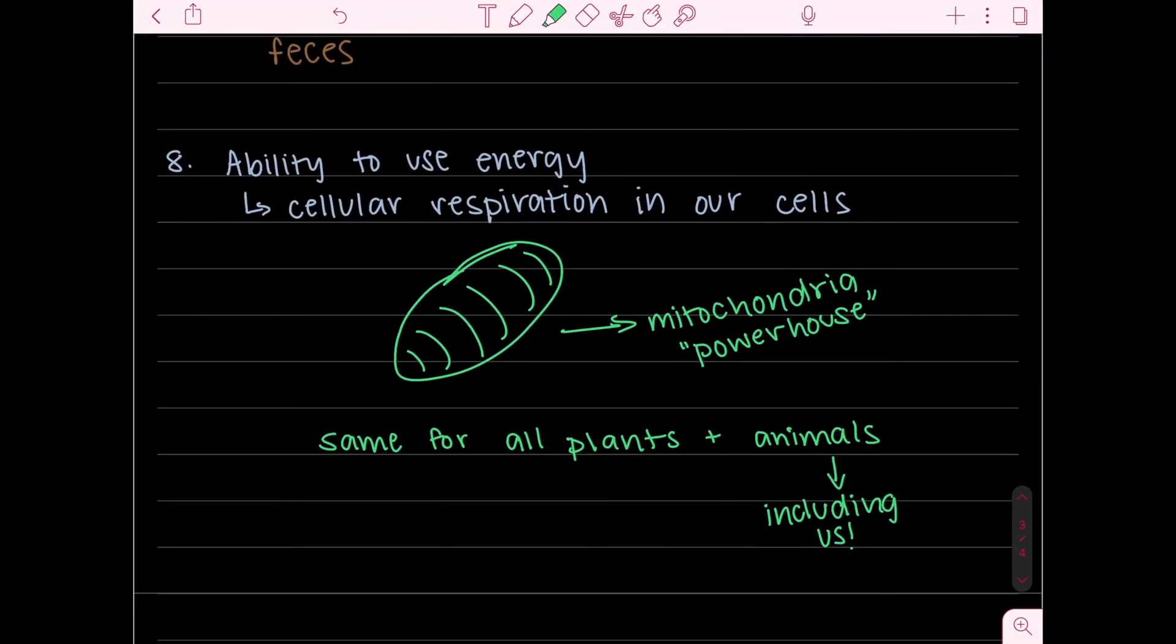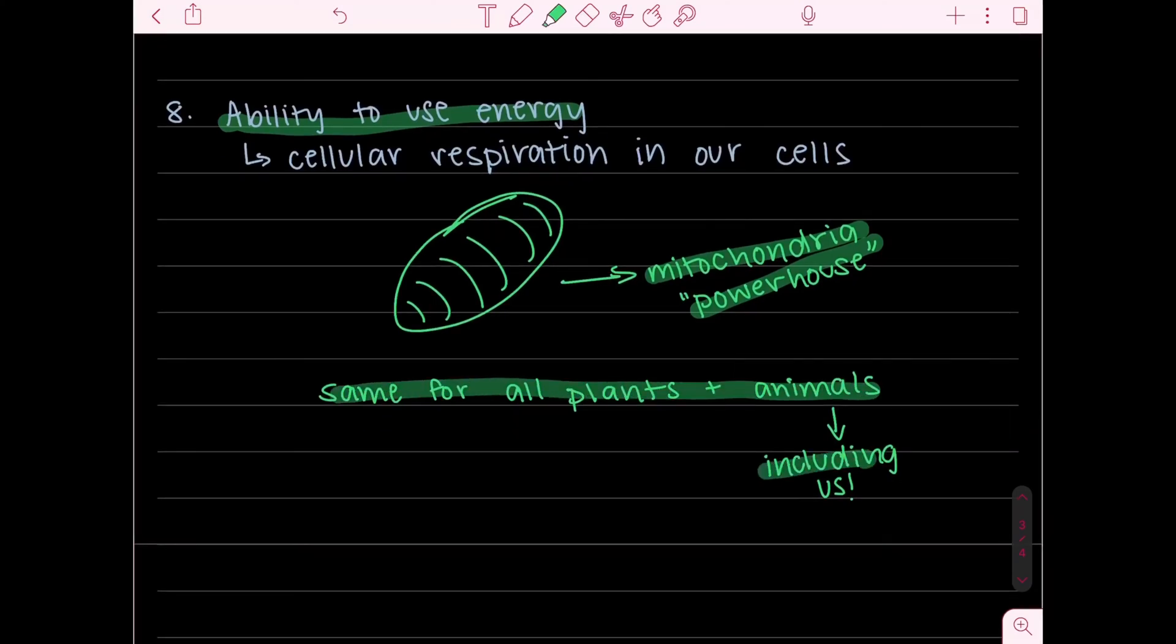Okay and finally the eighth characteristic is that the organism must have the ability to use energy. So for example in humans it's cellular respiration and this doesn't only go for humans but it goes for animals and it goes for plants. So every cell has an organelle called the mitochondria. You might have heard it as the powerhouse of the cell but this organelle is very very important because it hosts cellular respiration which is the powerhouse for creating energy in our bodies and cellular respiration is also another important bodily function that goes on in our cells as we speak today. And as I said this is same for all plants and animals including us because we are using this function right now too.